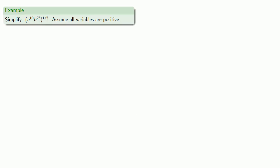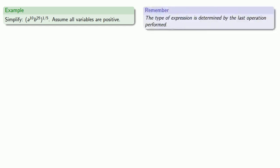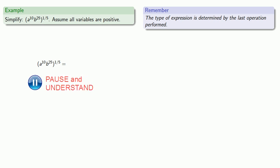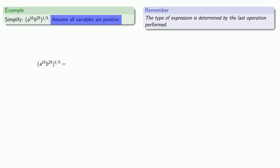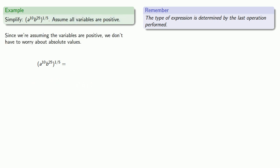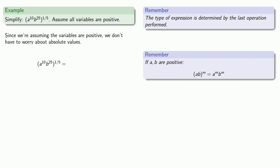The important idea is to take things one step at a time. A useful idea to keep in mind is that the type of expression is determined by the last operation performed. Here we have parentheses, which indicate that whatever is inside has to be taken care of first, and then we raise things to the power one-fifth. Since we're raising a product to a power, the product rule applies — the power applies to the individual factors.